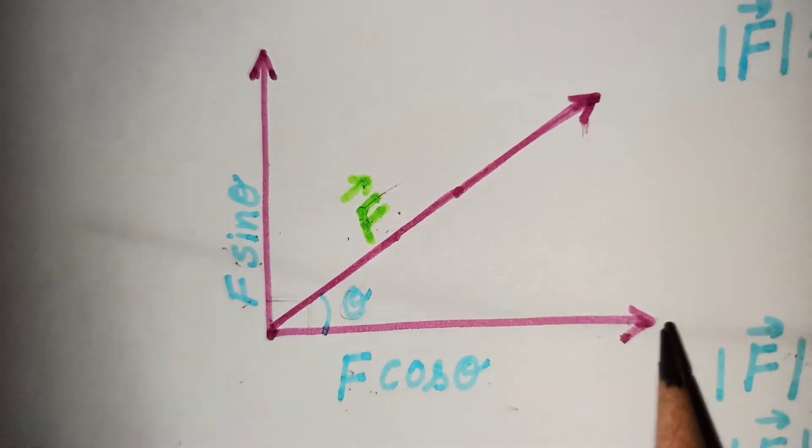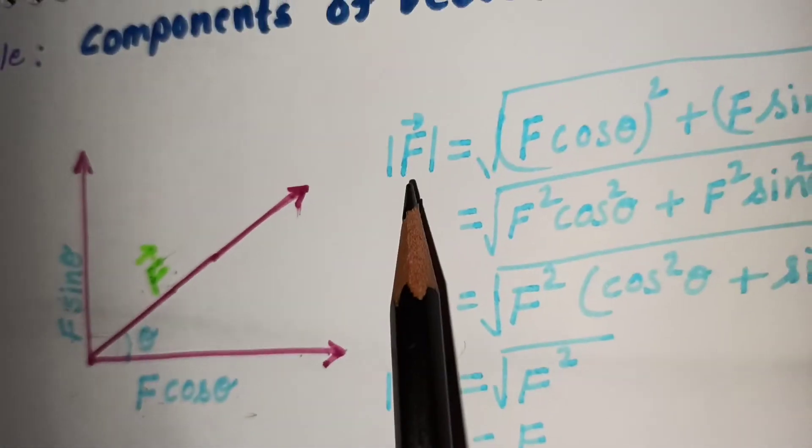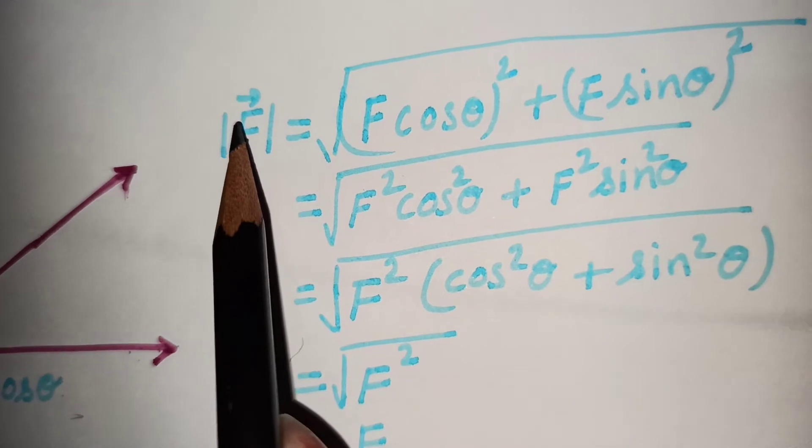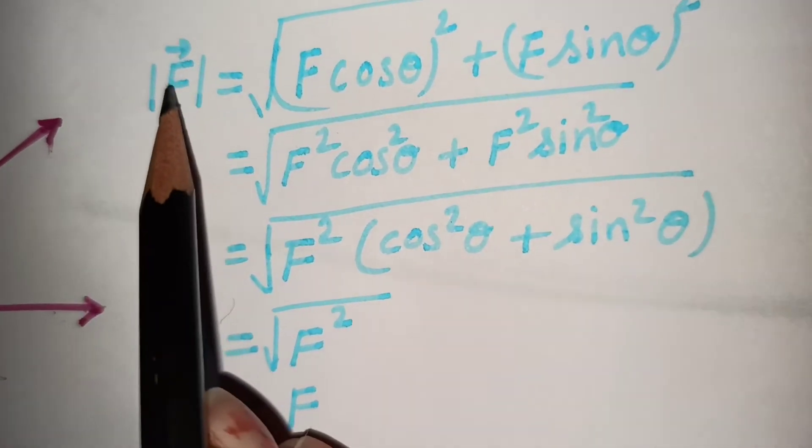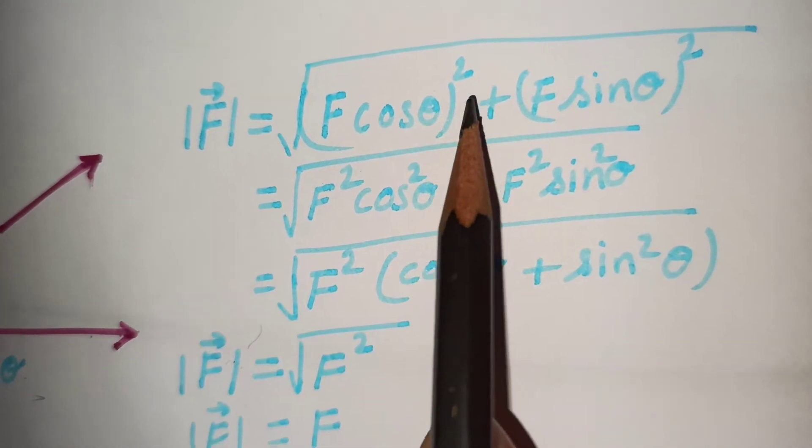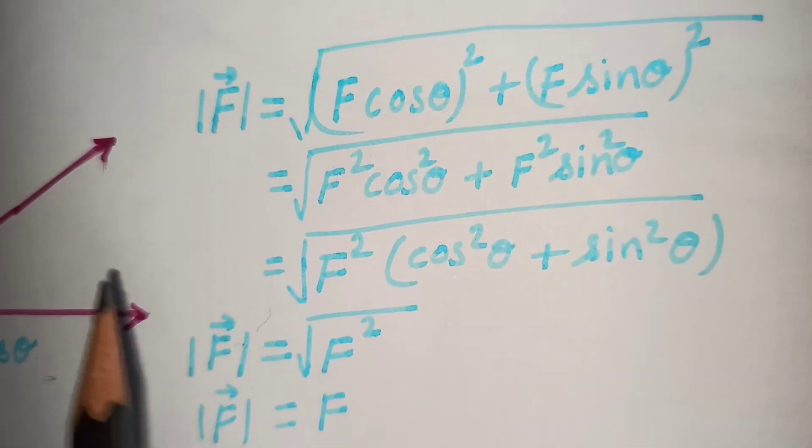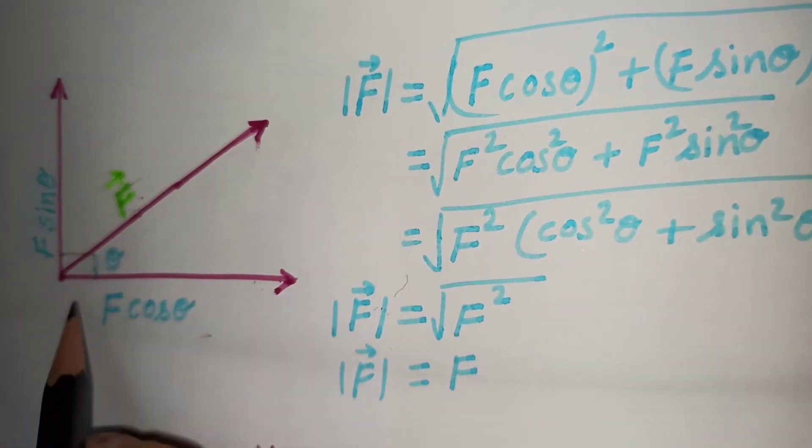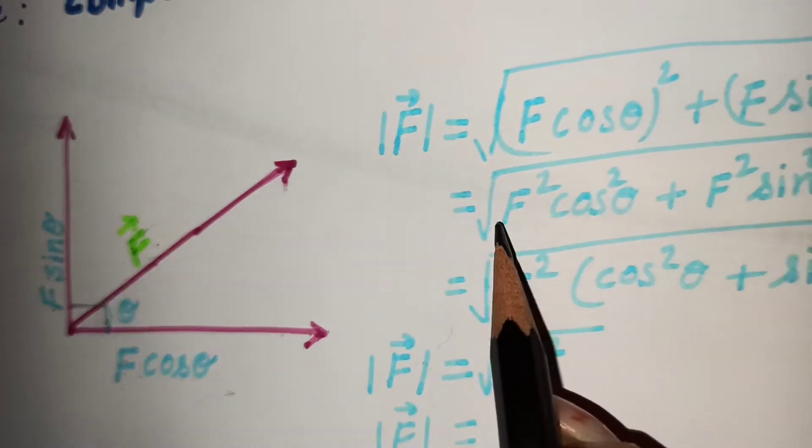Let us see the magnitude of the vector f. What will be the magnitude of f? The magnitude of the vector f will be denoted as modulus of f equals to f cos theta square plus f sine square theta because here this is on 90 degree. Both are perpendicular on each other.